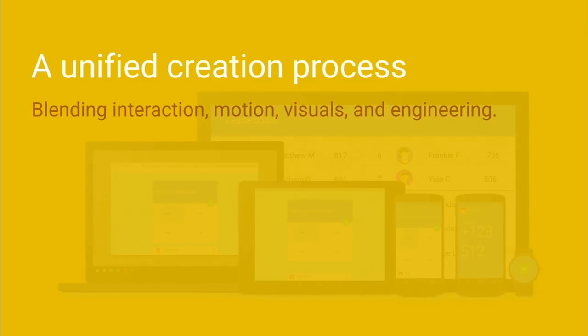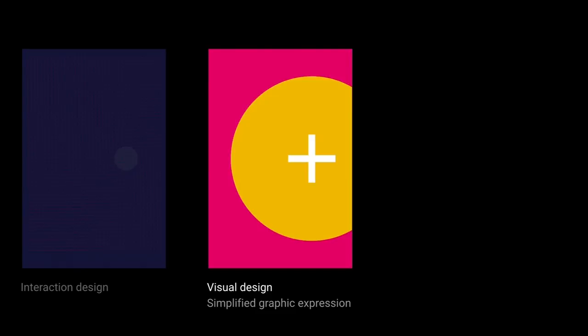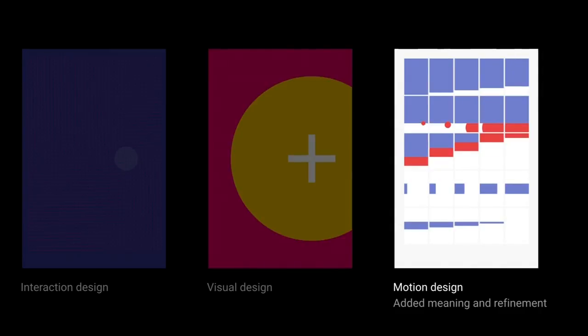Beyond platforms, we also care about working across different disciplines — interaction, motion, visual design, and engineering are often not deeply associated. We've been using this material metaphor to bind the different disciplines together and make them more collaborative. In interaction, materials reinforce the overall sense of hierarchy. Visual design becomes simpler because content itself can be very graphic in its hierarchy. Motion — in most ways the most important — provides a grounding that makes it consistent and intuitive, obeying realistic physics and allowing motion to be deeply tied into interaction and visual design.